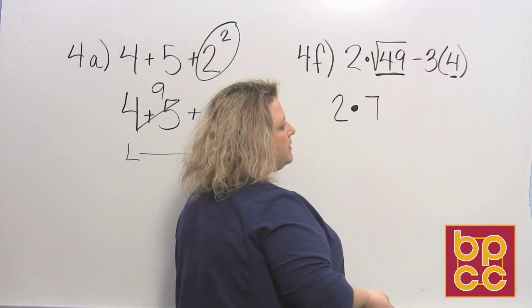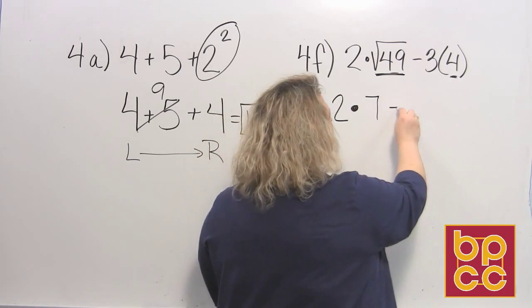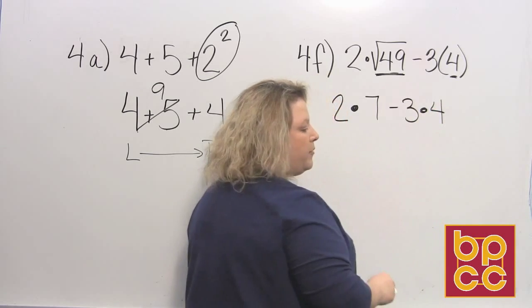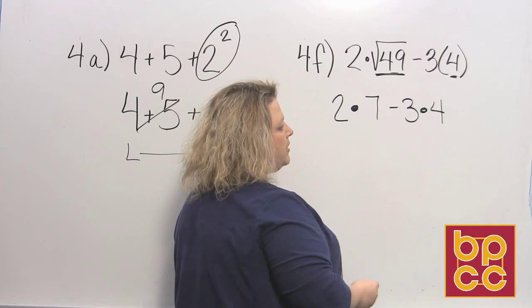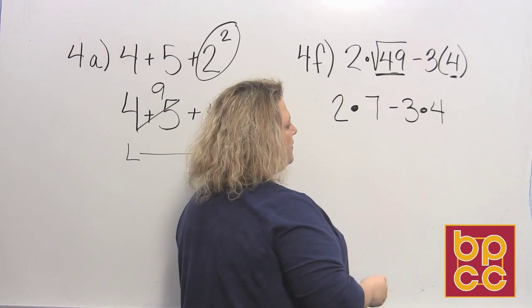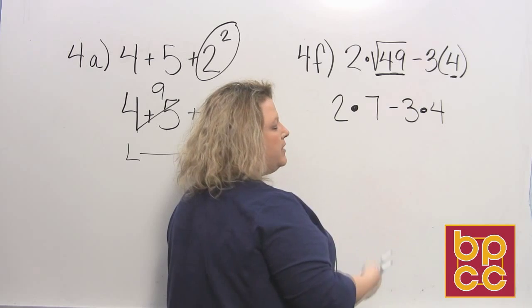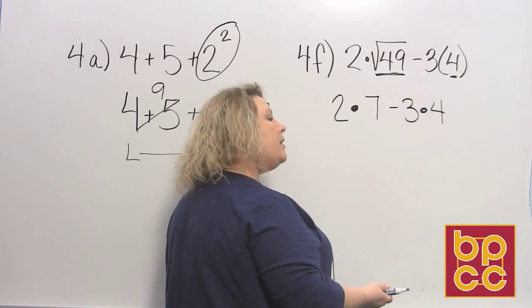Over here, these parentheses mean 3 × 4—that's what the parentheses represent in that particular part of the problem. I have now gotten rid of the parentheses and the square roots. Now I'm going to look at multiplying and dividing from left to right.